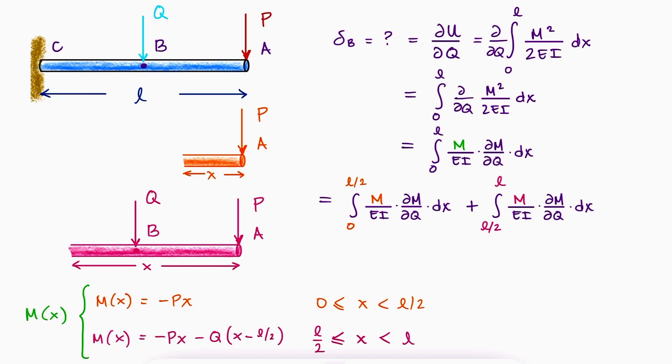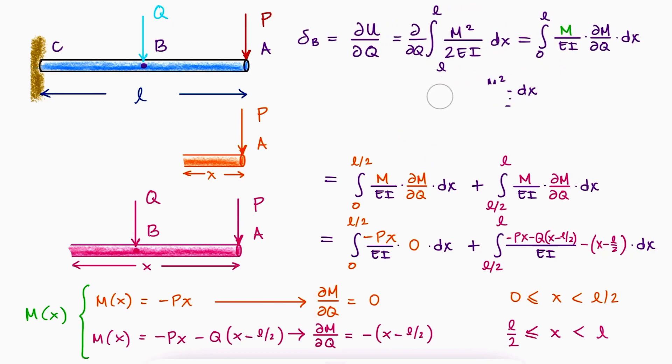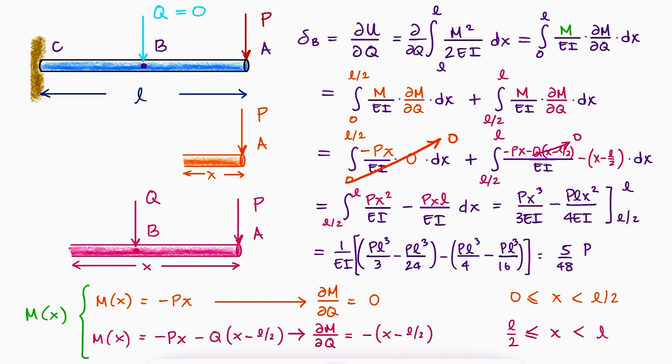Now, since we need the partial derivatives for each section too, we calculate the partial derivative of the moment with respect to q for each one of the two sections of the beam, and we substitute both m and the partials of each section within the integral. Since the partial of m with respect to q is 0 for values of x between 0 and l over 2, the first integral is 0. And since the magnitude of q is 0, the second integral is greatly simplified. Integrating the remaining terms, evaluating them between their interval, and simplifying the fractions we obtain, we find that the deflection is 5 over 48 times pl cubed over ei.